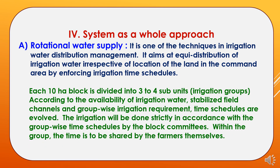The fourth theoretical approach is the system as a whole approach. Under this, there is the rotational water supply system, a technique in irrigation water distribution management. It aims at equitable distribution of irrigation water irrespective of the location of land in the command area, by enforcing irrigation time schedules. Each 10-hectare block is divided into three to four subunits called irrigation groups. According to water availability, field channels, and group-wise irrigation requirements, time schedules are evolved. Irrigation is done strictly in accordance with these group-wise schedules by block committees, while within each group the time is shared by the farmers themselves.